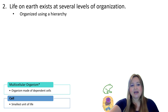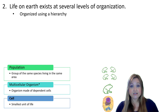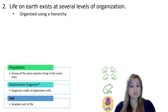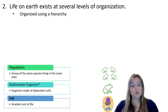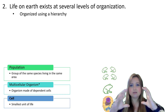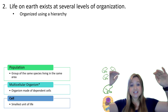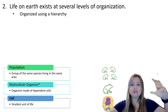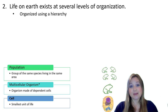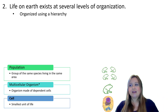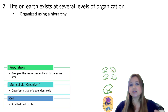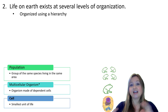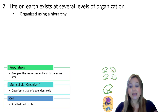A population is defined as a group of the same species living together in the same area. At the multicellular organism level we were looking at one single frog, but at the population level we've built upon that — now we're talking about a group of frogs, the same species, living in the same space at the same time. When biologists talk about populations, they mean a group of the same species living together in the same area at the same time. Here we have a population of frogs.